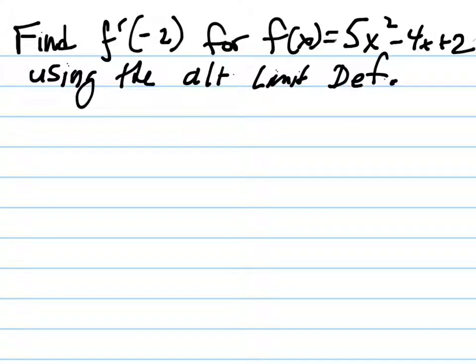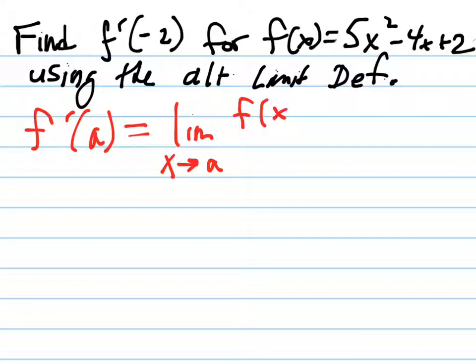An example: find f prime of negative 2 for this function using the alternate limit definition of derivative. The alternate limit definition of derivative is the formula from the first slide. The derivative at that number a is the limit as x approaches a of f of x minus f of a, change in output, over change in input.